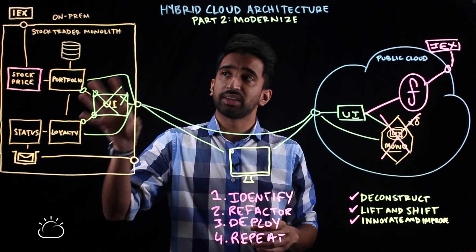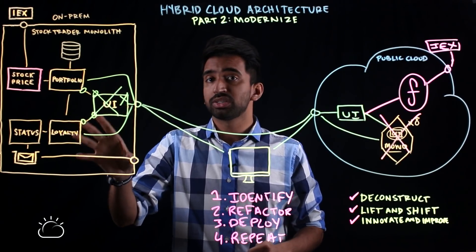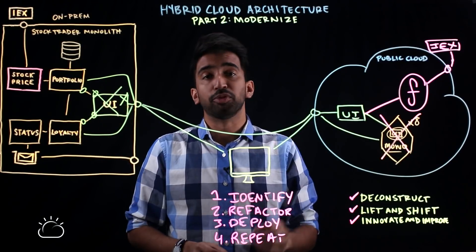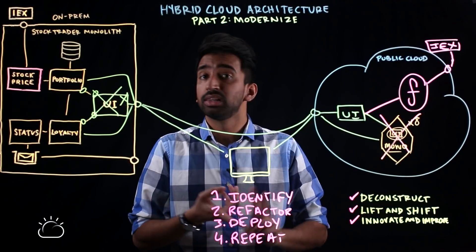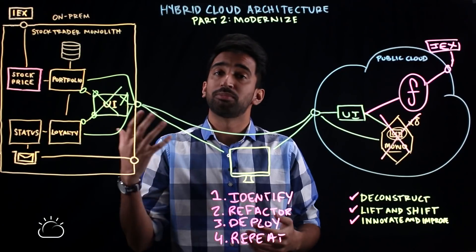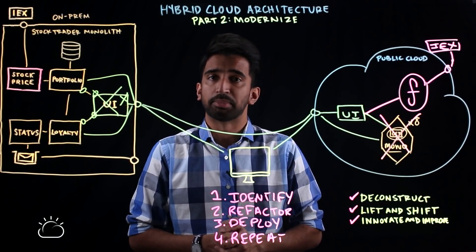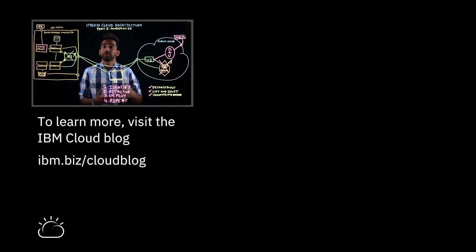We've talked about how to use this four-step process to break individual portions out of a monolithic architecture and move them into the public cloud. These three things — deconstruction of monoliths, lifting and shifting, and always innovating and improving — are going to set you up for success when modernizing your monolithic applications. We're always checking for feedback, so drop a comment below. In the next part of the Hybrid Cloud Architecture series, we'll be talking about security, so subscribe and stay tuned. Check the related information for links below.